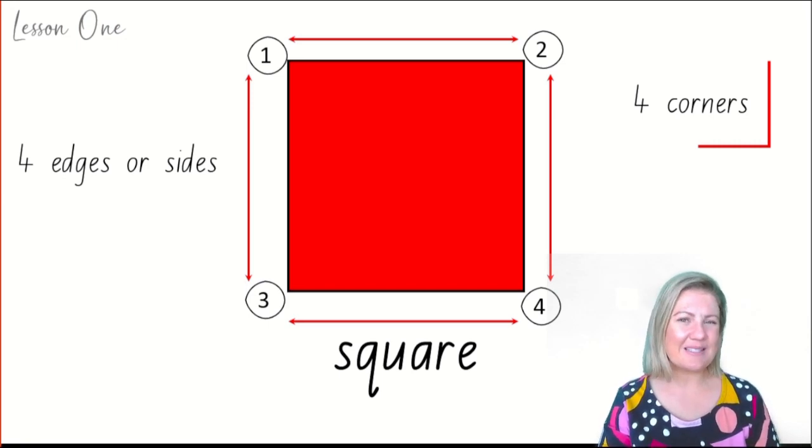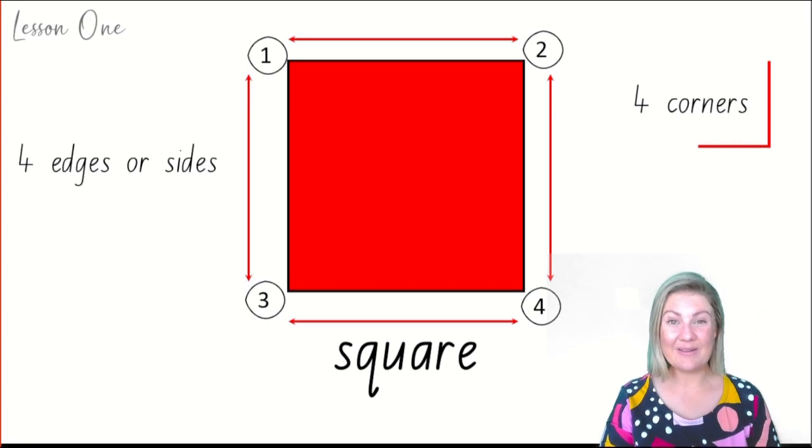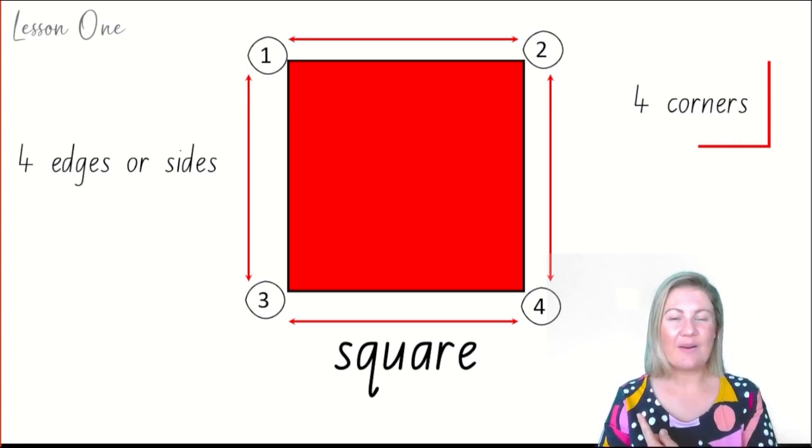What else do you notice about a square though? Well, I noticed that all of the sides are the same size. There aren't a mix of long lines and short lines. It's like an equal shape. The sides are the same. This is a square and it has four sides and four corners.